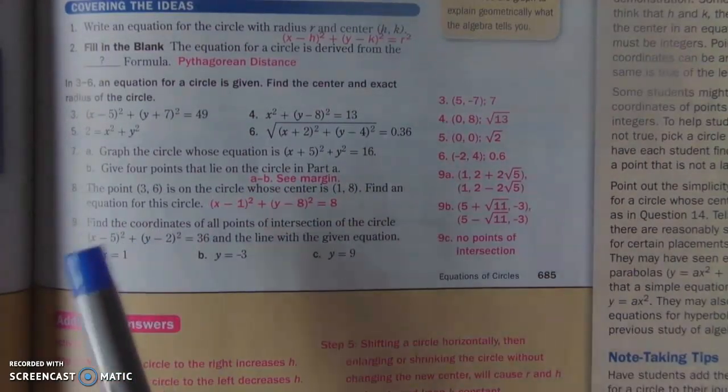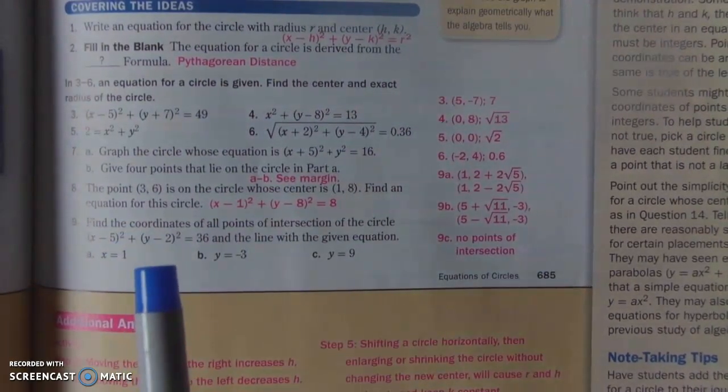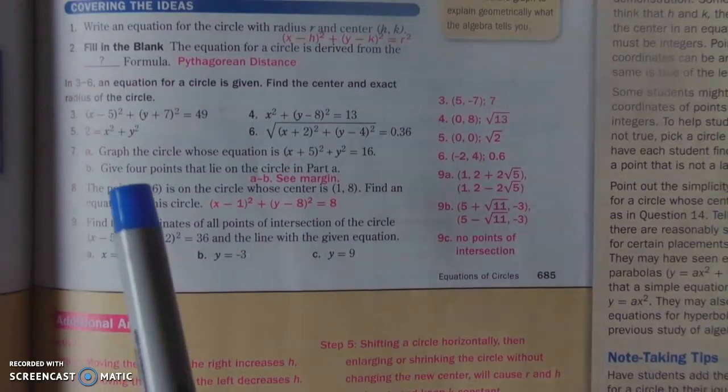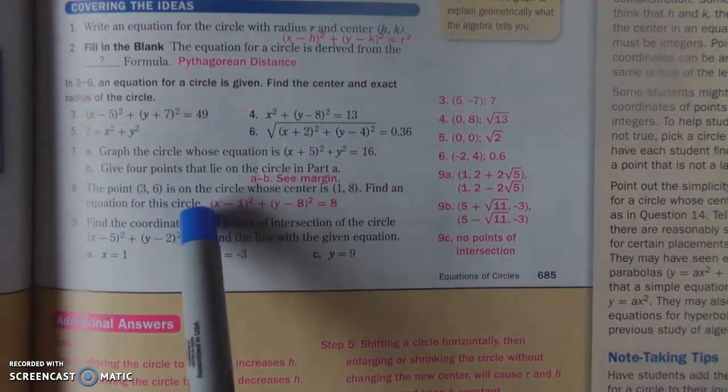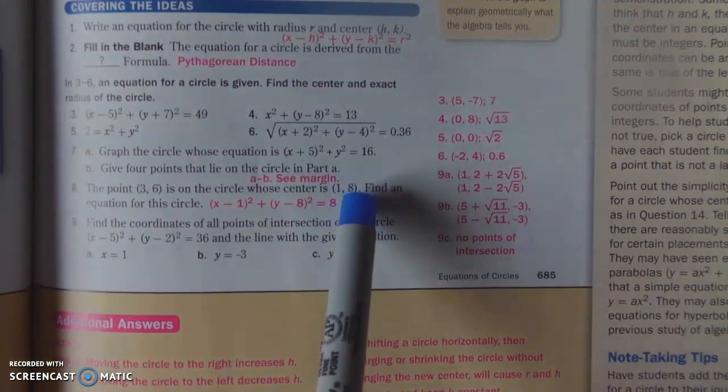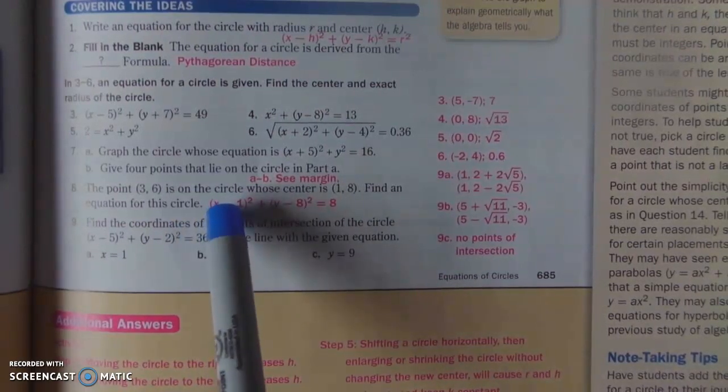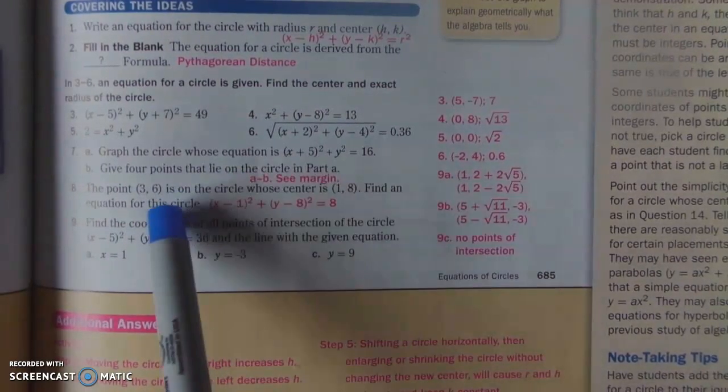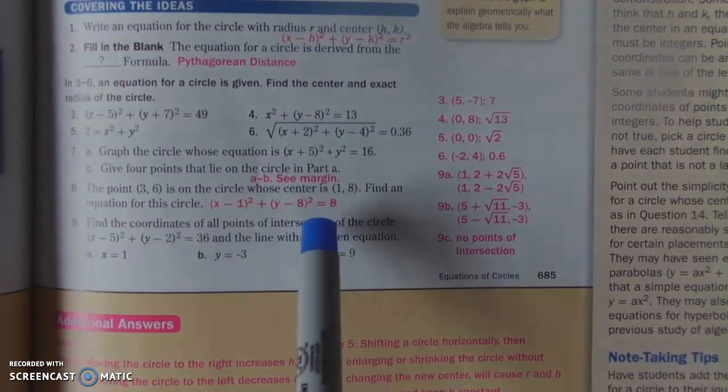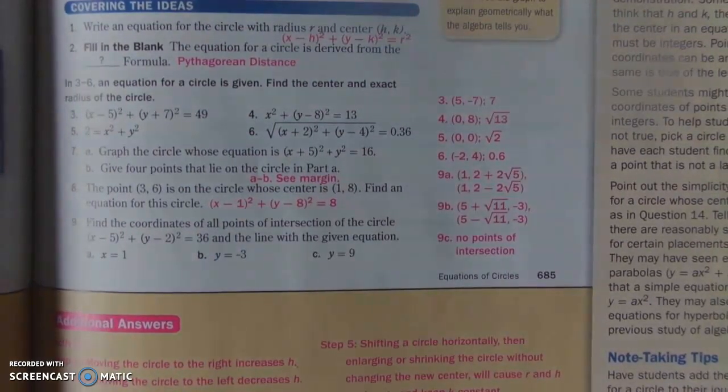But let's look at number eight. Number eight is, I would say, the problem child of all of these because it is one that is not like any of the other problems that we've looked at. In this problem, it tells you a point on a circle and that point is 3, 6. And it also tells you the center of the circle, 1, 8. And we want to find the equation for the circle.